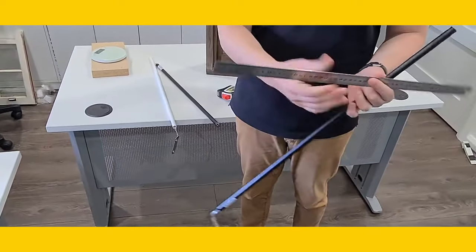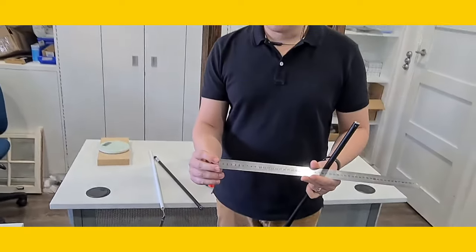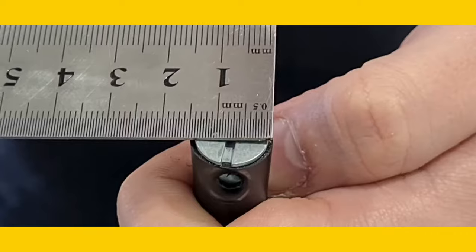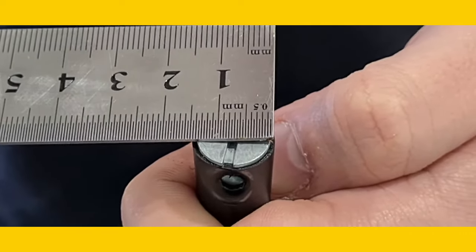I prefer to use the metal rulers just because the starting point of the ruler makes it a lot easier, and you simply measure the diameter.